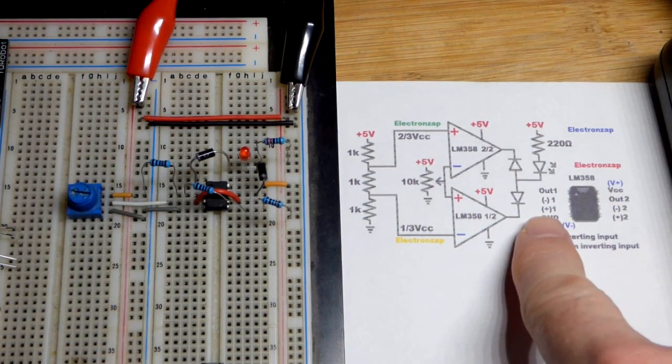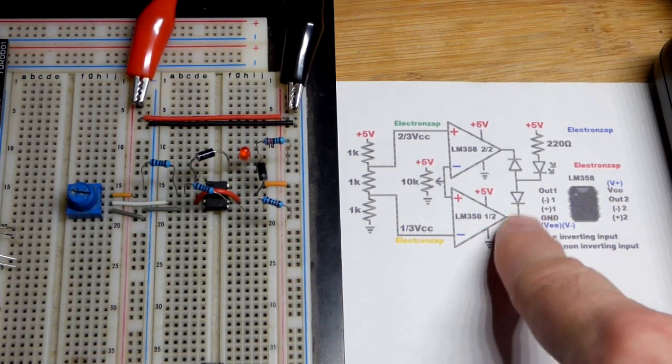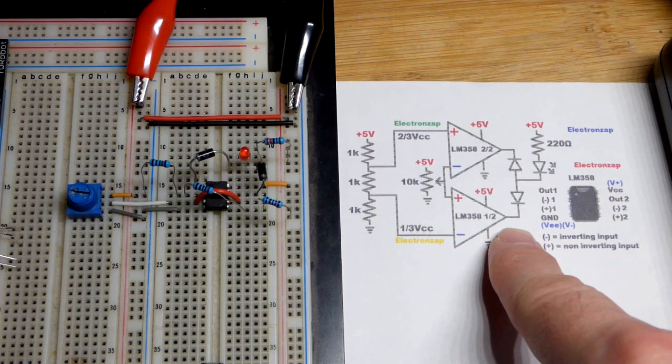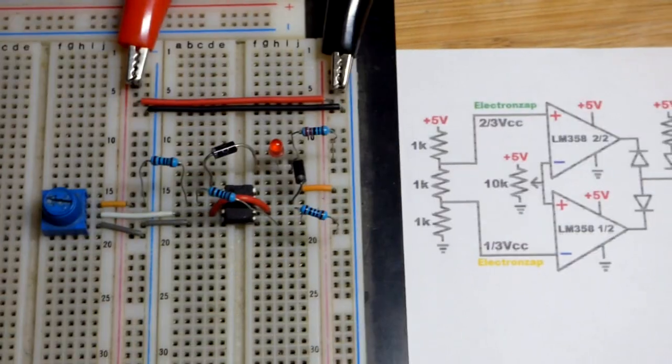So now in this video we're going to use the diode OR gate from a recent video and make a window comparator right here.